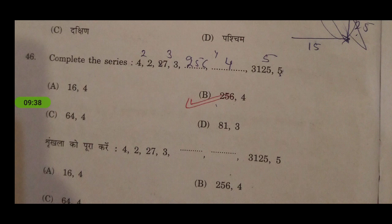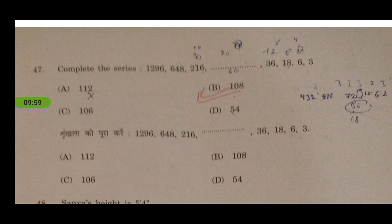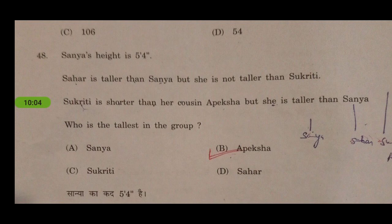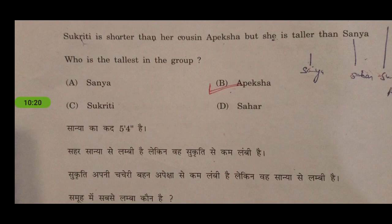The series is based on alternating square, cube, and quadruple values. The next number series is also based on an alternate system and easily solvable. Next: Sanya's height is five feet four inches; Sahar is taller than Sanya but not taller than Soekriti; Soekriti is shorter than her cousin Apeksha but taller than Sanya. Who is the tallest in the group? The answer is Apeksha.